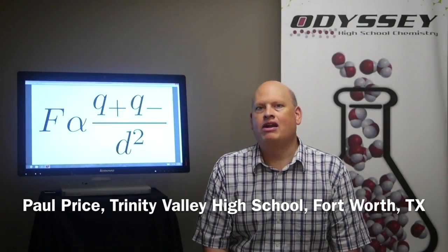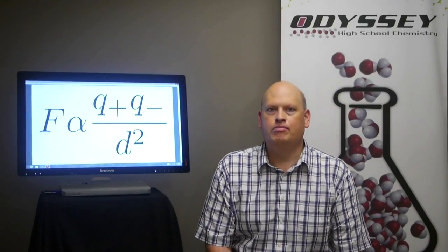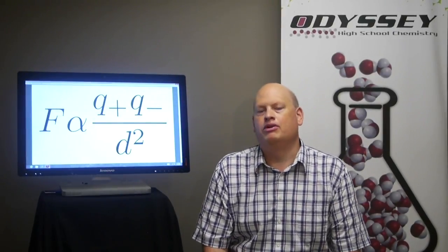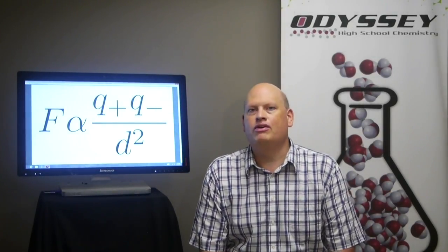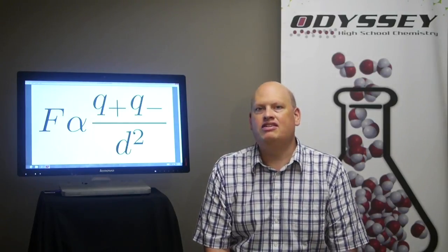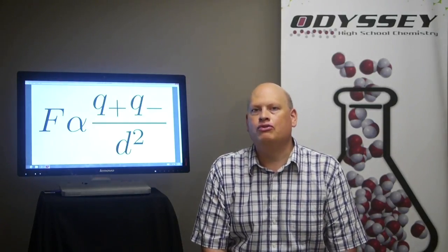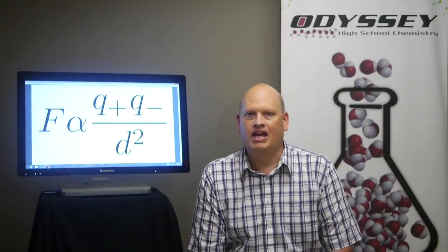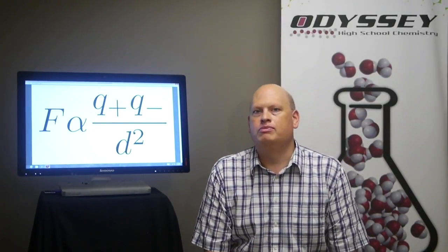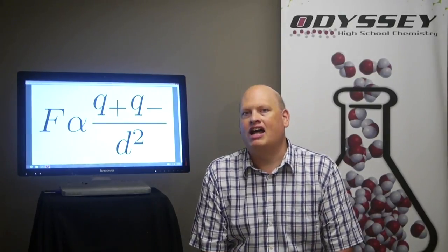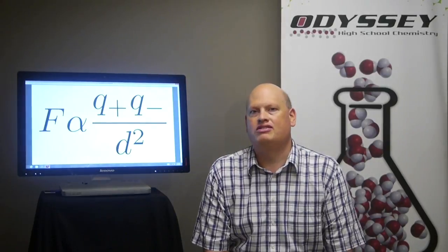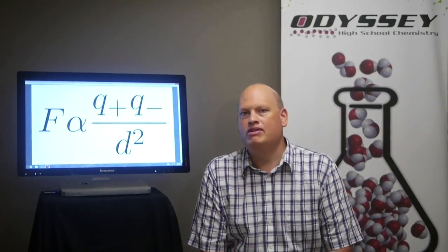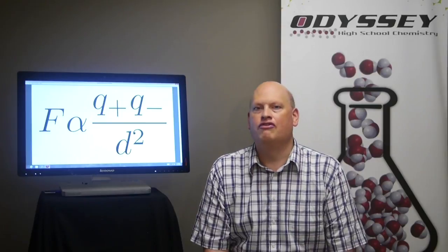In chemistry, understanding how atoms form bonds to make molecules is critically important. It seems like it should be so simple — we really only have two types of bonding to worry about: ionic and covalent. Although teachers frequently do everything they can to help students understand the details of each type of bonding, without great molecular visualization it can be very difficult. In this video, we're going to look specifically at ionic compound formation and how the Odyssey Molecular Modeling Program can help understand how ionic compounds form and remove misconceptions in ionic bonding that frequently occur.